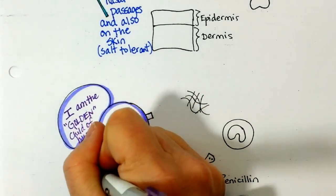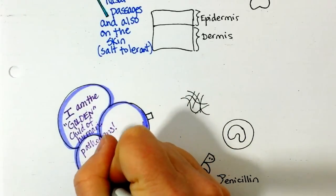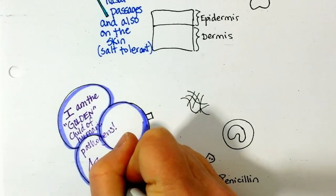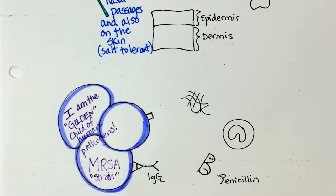MRSA is a well known strain of Staph, Staph aureus. And when I say strain I'm not talking about a different species. It's still Staph aureus but within any species of bacteria there can sometimes be hundreds of strains.